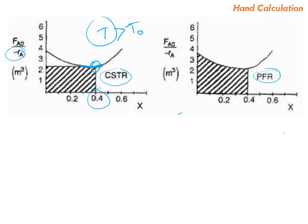Compared to the plug flow reactor, where the temperature starts at T0 until it reaches T, the PFR starts with a low rate of reaction and gradually operates at a higher rate of reaction. Overall, the CSTR is operating at the highest rate of reaction compared to the plug flow reactor, which starts at a low rate of reaction and then, as you go down the length of the reactor, the rate increases due to the increase in temperature. Since the CSTR operates at a higher rate of reaction, it requires a lower volume.